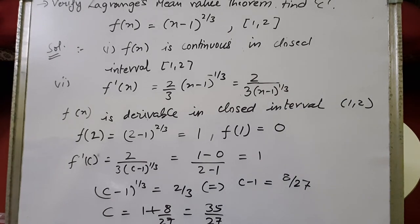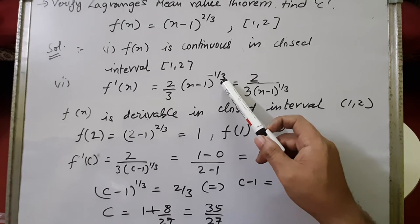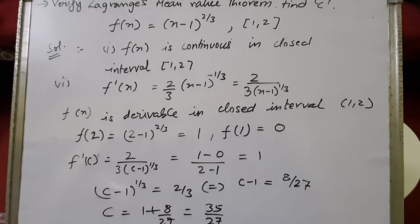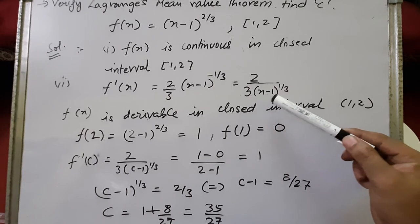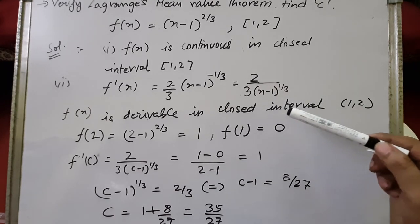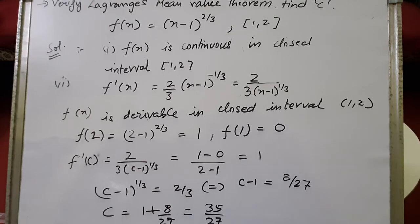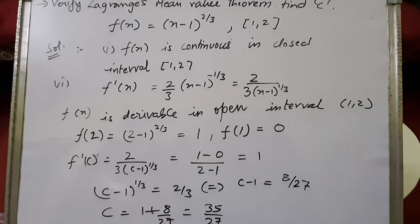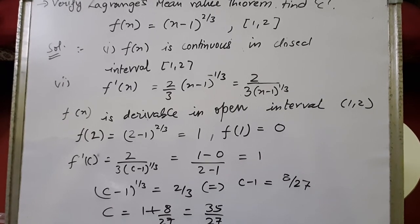Second condition: f'(x) = (2/3)(x - 1)^(2/3 - 1) = (2/3)(x - 1)^(-1/3) = 2 / [3(x - 1)^(1/3)]. At x = 1, the denominator becomes 0, so f'(x) is not defined at x = 1. However, x = 1 is an endpoint and not in the open interval (1, 2), so f(x) is differentiable in the open interval (1, 2). Both conditions are satisfied.